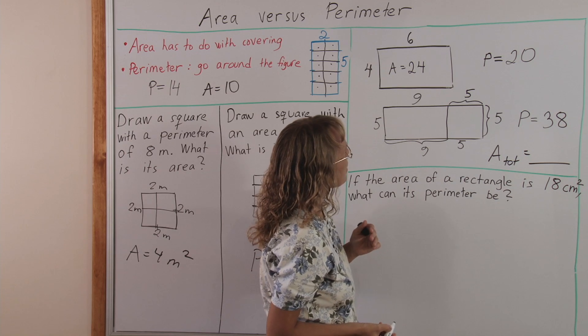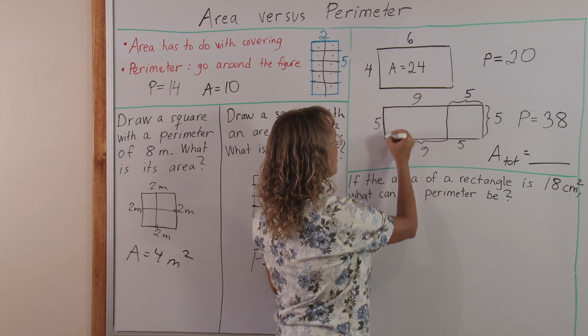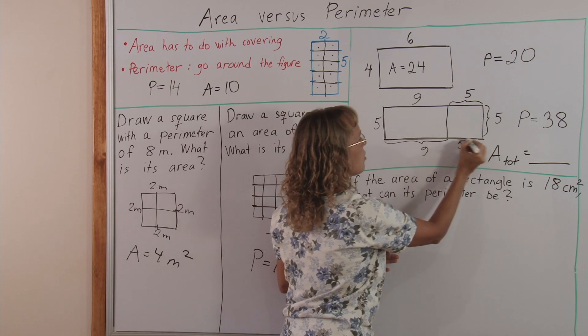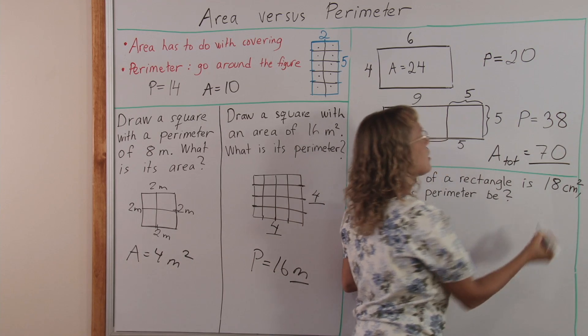Okay, now we can find the area by multiplication. We need this times this whole side, five times fourteen, which is seventy, seventy squares or seventy square units.